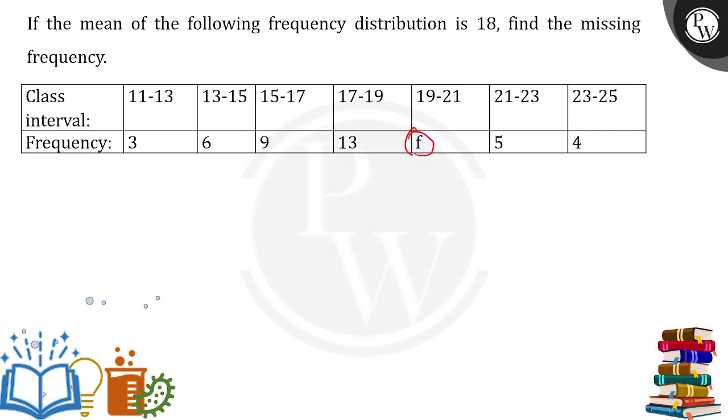Let's start understanding this part. We know that the class interval, let me draw this side, class interval or I must say CI, simply CI: first 11-13, 13-15, 15-17, 17-19, 19-21, 21-23, and 23-25.